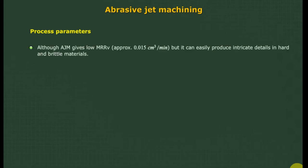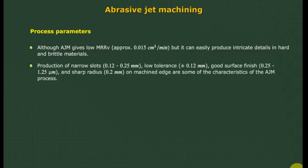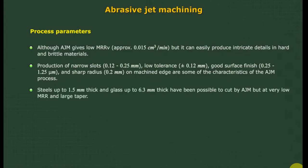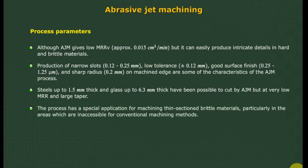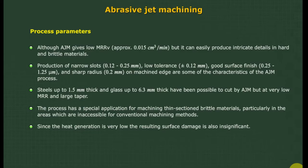The process capabilities of AJM: although AJM gives low MRR, it can easily produce intricate details in hard and brittle materials. Production of narrow slots (0.12 to 0.25 mm), low tolerance (±0.12 mm), good surface finish, and sharp radius (0.2 mm on machined edge) are some characteristics of the AJM process. Steels up to 1.5 mm thick and glass up to 6.3 mm thick have been cut by AJM, but at very low MRR and with large taper. The process has special application for machining thin-sectioned brittle materials, particularly in areas inaccessible for conventional machining. Since heat generation is very low, the resulting surface damage is also insignificant.